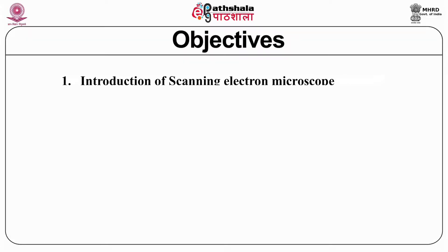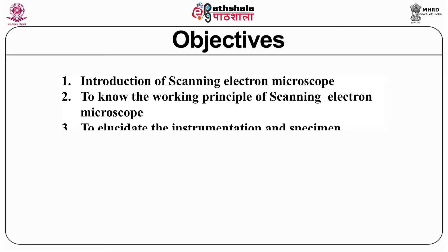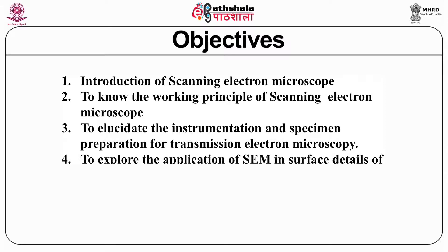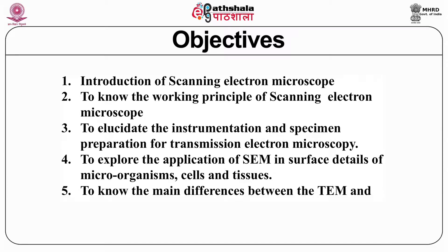Just before we do scanning electron microscopy, I want to recapitulate the previous modules. The first module covered light microscopy, also known as optical microscopy, and then we did TEM, that is transmission electron microscopy. Light microscopy uses visible light; transmission electron microscopy uses electrons. In scanning, we also use electrons. The wavelength used is different in TEM and light microscopy, and the medium in TEM is vacuum whereas in light microscopy it is normal air. The resolving power is also different — in light microscopy you can only resolve down to 200 nanometers, whereas in TEM you can achieve up to 0.1 nanometer.